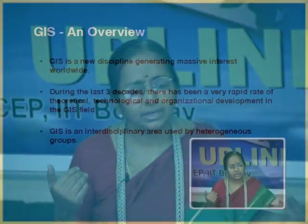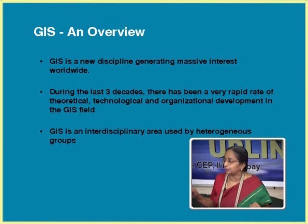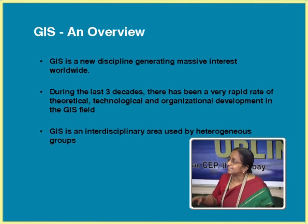GIS, if you really want to define it, can be considered art, science, engineering, and technology. I won't consider GIS as completely a geography field, nor purely mathematics, nor only engineering — it has technology involved too. The art, science, engineering, or discipline which tries to solve these kinds of spatial problems is GIS technology. This discipline has started generating massive interest worldwide. Today, there is no field where GIS cannot be applied — that is the way this technology is growing.